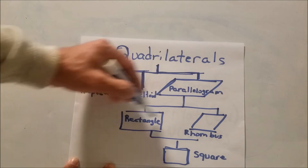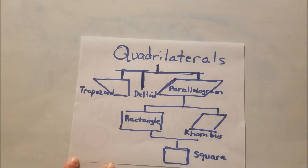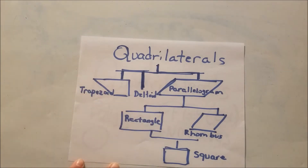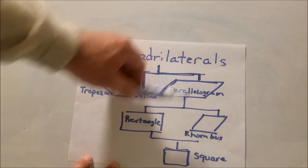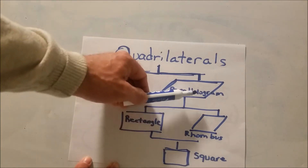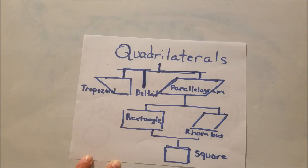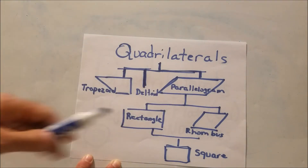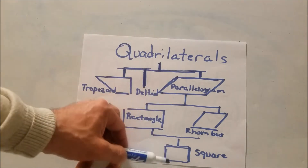The parallelogram branches off into a rhombus and a rectangle, and at the bottom is a square. Here's where it gets tricky: a square can be called a rectangle, but a rectangle cannot be called a square. If it's higher on the tree, it can be called something above it but not below. Every square is a parallelogram, but not every parallelogram is a square.